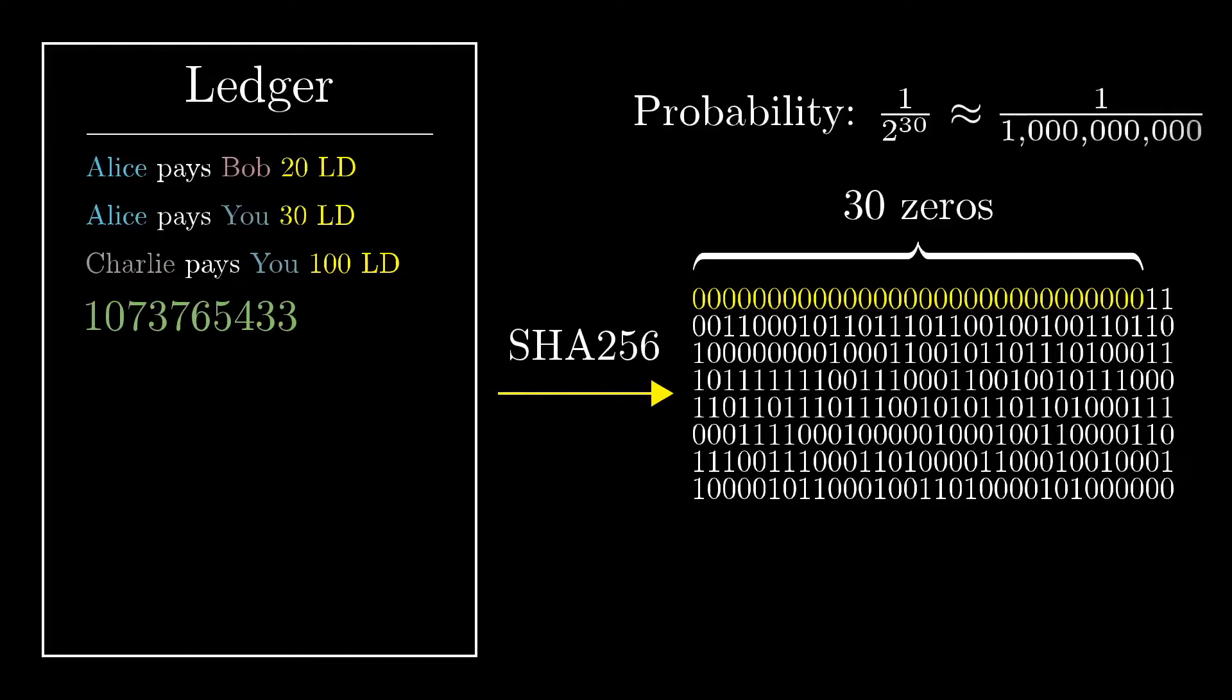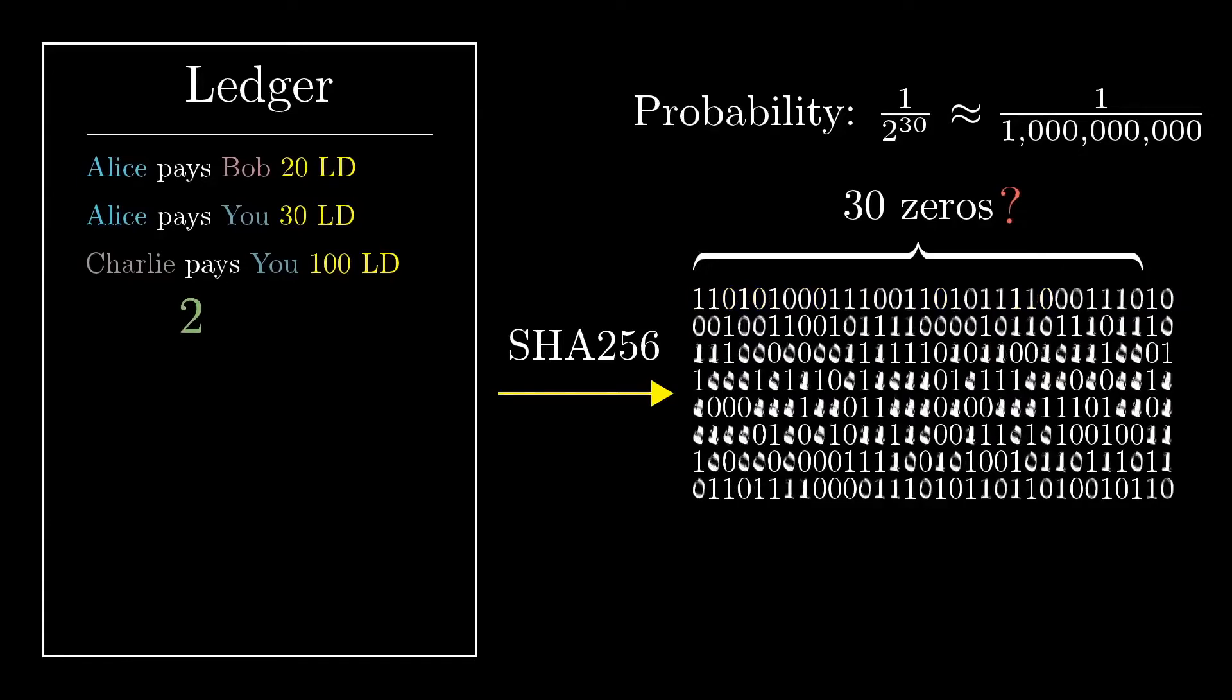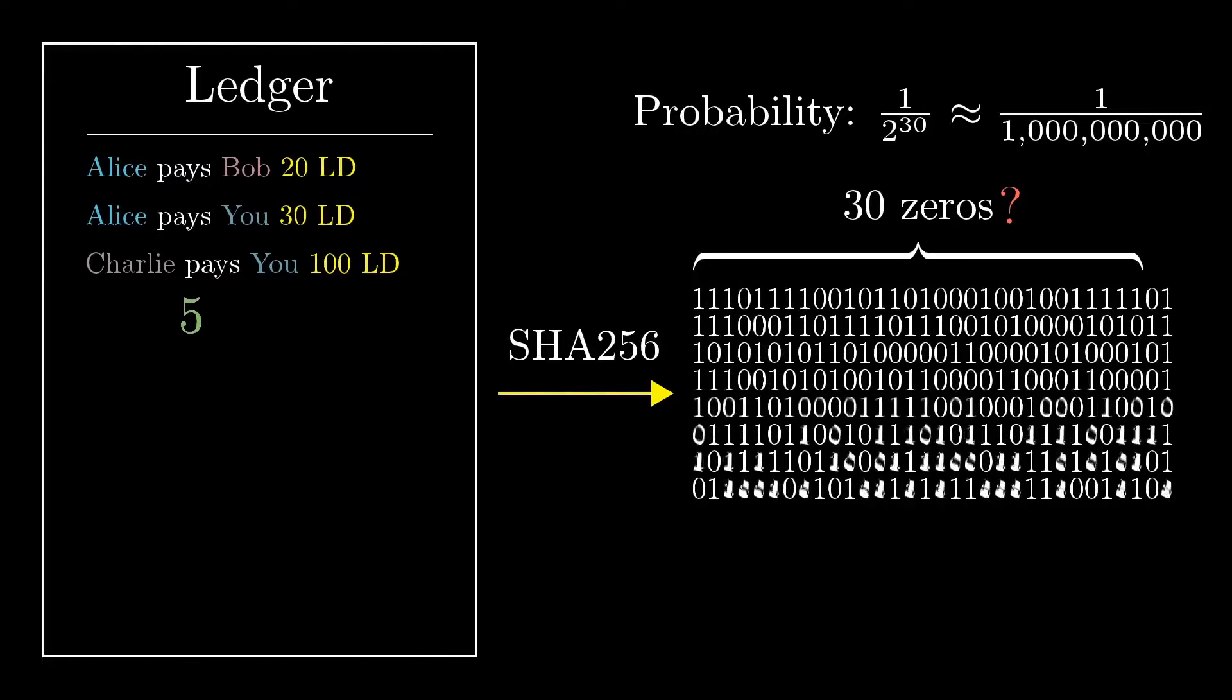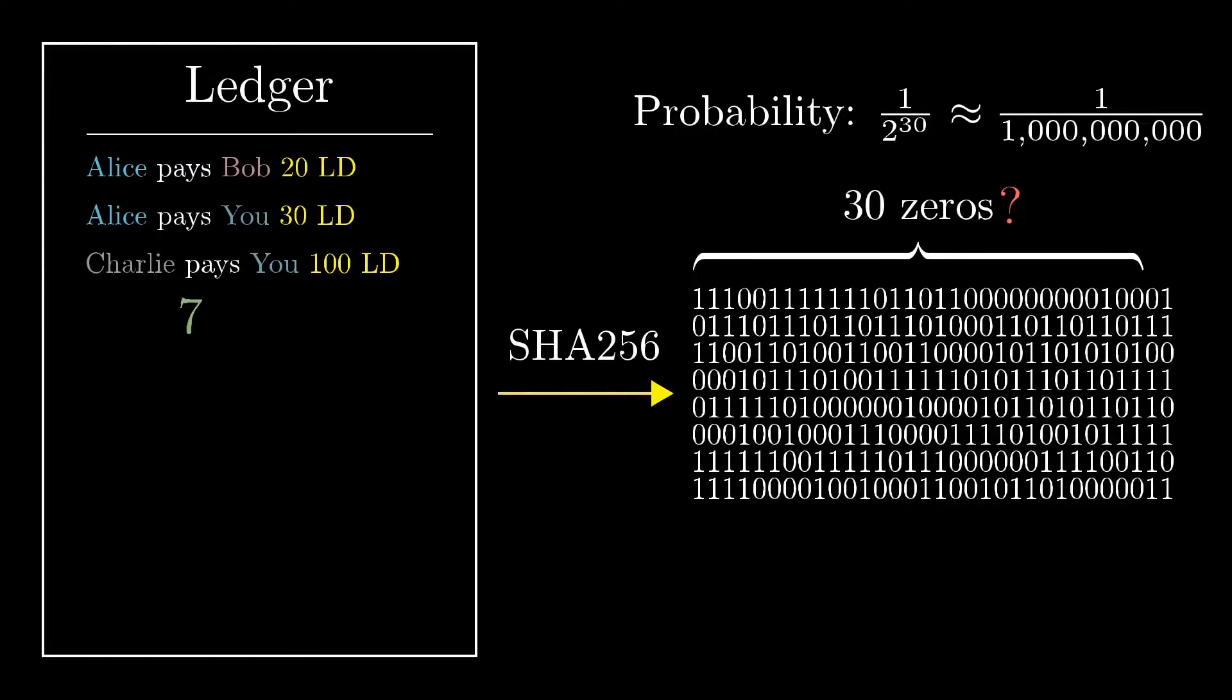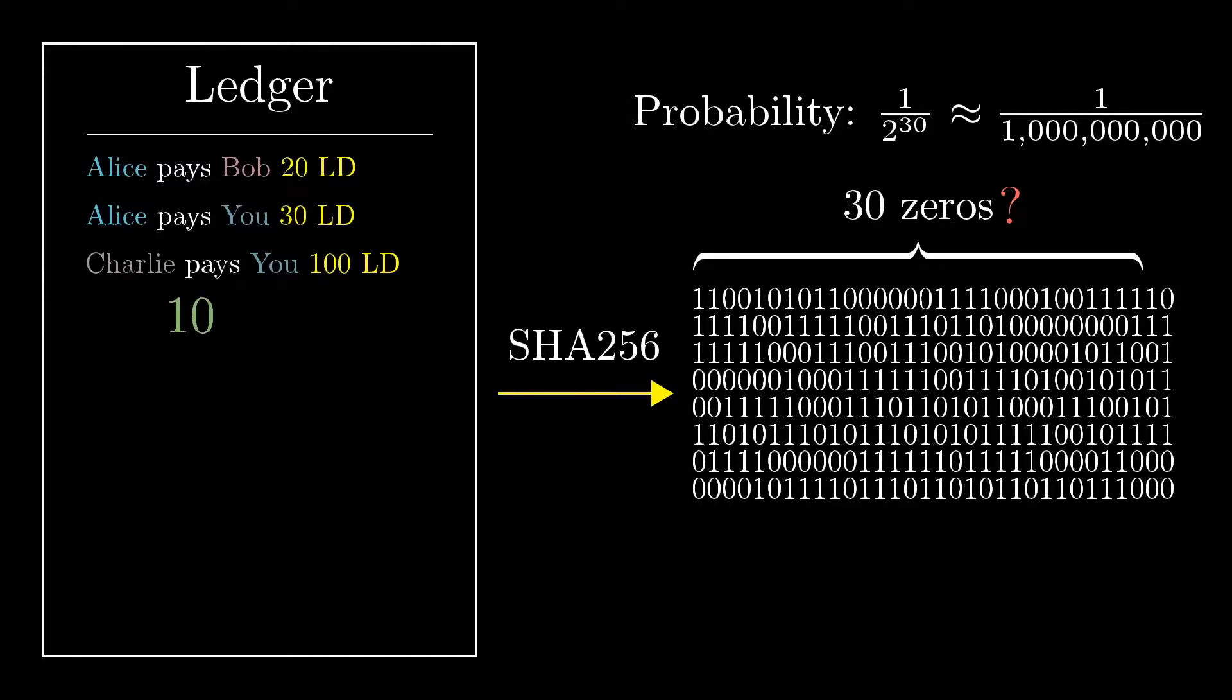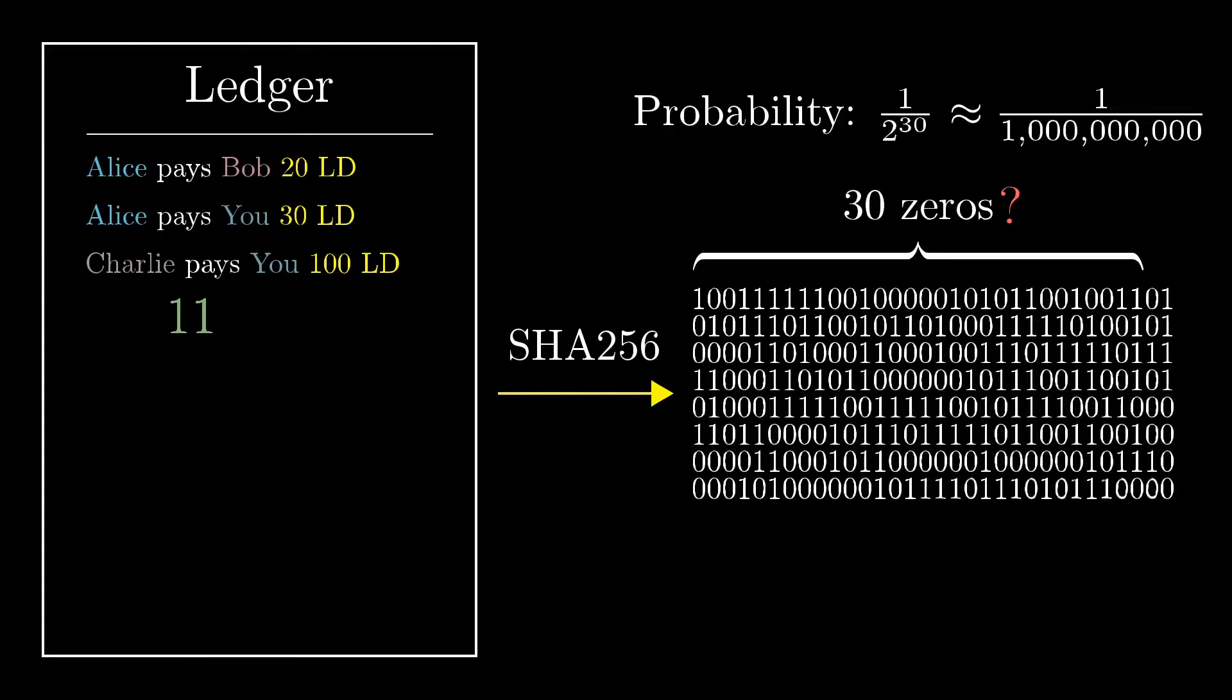And because SHA-256 is a cryptographic hash function, the only way to find a special number like that is just guessing and checking. So this person almost certainly had to go through about a billion different numbers before finding this special one. And once you know that number, it's really quick to verify—you just run the hash and see that there are 30 zeros.